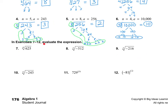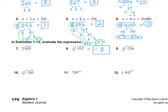In exercises 7 through 12, we need to evaluate the expression. I'm going to start with number 8: the third root of negative 512. Since it's an odd root and there's a negative in here, I know that my answer is negative. Remember, it's allowed to have a negative inside the radical if the index is odd. 512 is 8 times 64, and 64 is 8 times 8. So we have three 8s, and 8 times 8 times 8 is 512. That means the third root of negative 512 is negative 8.